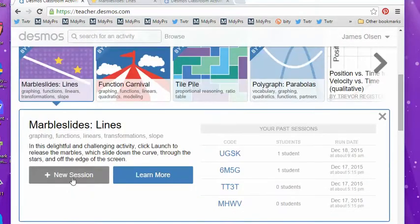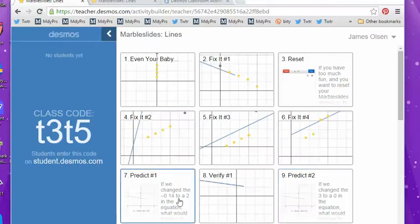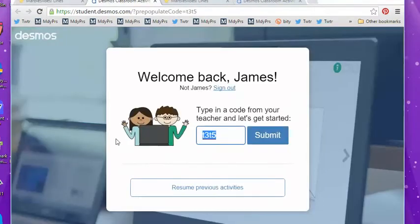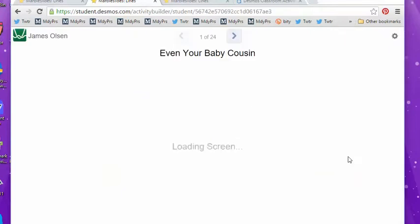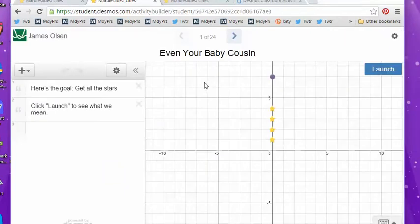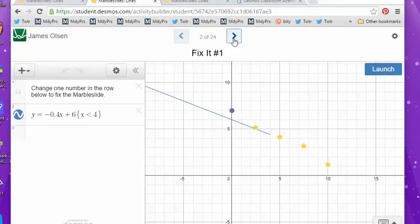So I'm going to hit New Session. Then I'm going to click on the class code over here. Then hit Submit. And here's where you put in your name. And I'm going to let you do the first slide. The only slide I'm going to demonstrate is the second slide, which is this one.